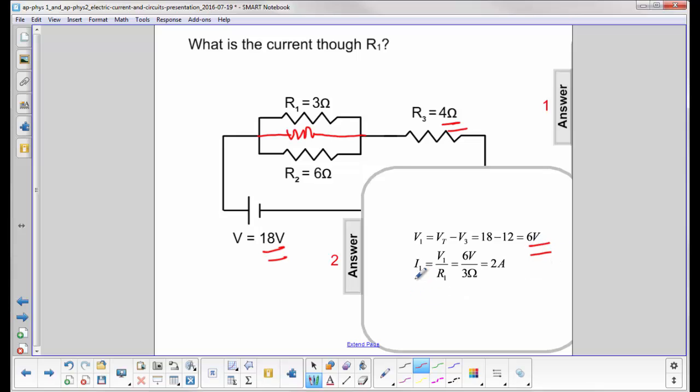So find the current in I1, that would be V1 over R1, or 2 amps.